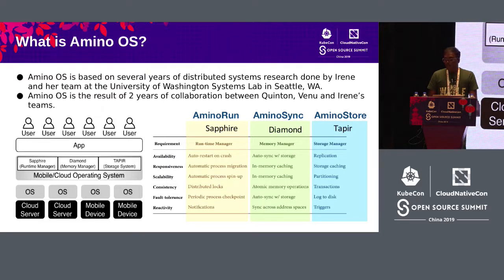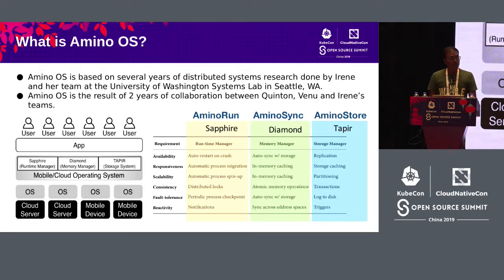A lot of research had been going on for several years at the University of Washington. Around the time Irene published her thesis, we came across it and thought it was worth turning into an open-source project in CNCF so that people can use it. The research wasn't originally intended for that purpose — it was really exploratory. Note that some terminology in the academic papers floating around the internet differs from what we describe here. For example, we renamed Amino System to Amino Run, Diamond to Amino Sync, and so on. If you see contradictory terms, hopefully you'll understand the origin.